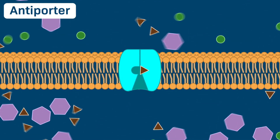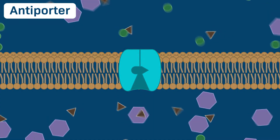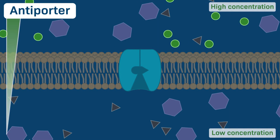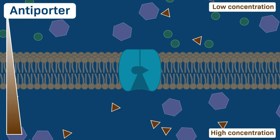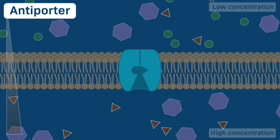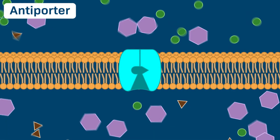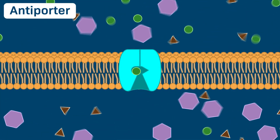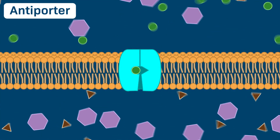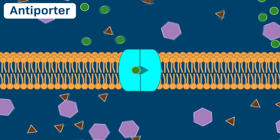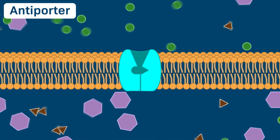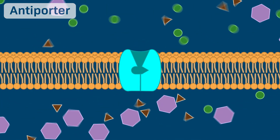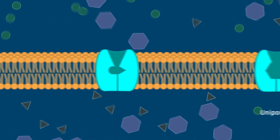Note that this antiporter is moving both solutes against their concentration gradients, making this an example of active transport, which requires an input of energy. For example, antiporters often hydrolyze ATP to pump solutes against their concentration gradients.